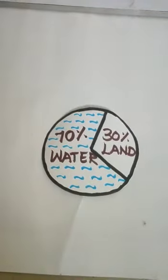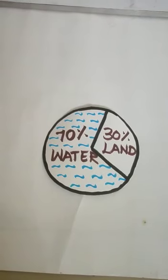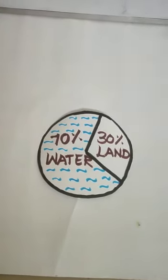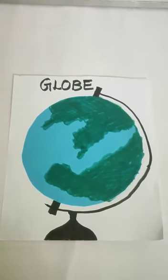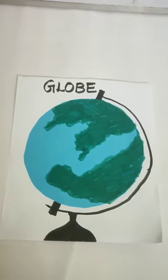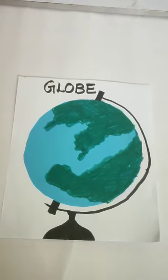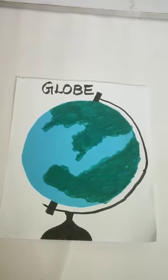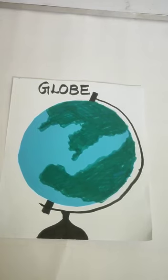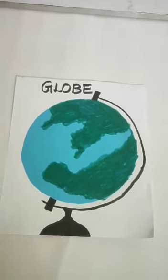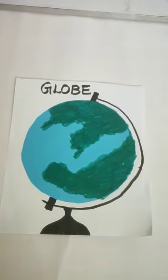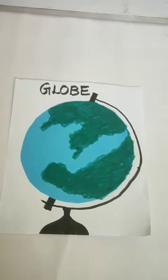So we have 70% water and 30% land. Now, the shape of the Earth: the Earth is round and spherical in shape. We can say that the Earth is like the shape of a globe, which is the model of the Earth. The photographs of the Earth taken from outer space by astronauts prove that the Earth is round.